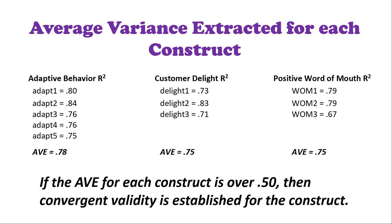The CFA also gives you a squared multiple correlation, or R-square — how much of the variance you are explaining. The average variance extracted is basically where you take the squared multiple correlation for each indicator within a construct and average them. For adaptive behavior with five indicators, the squared multiple correlations were 0.80, 0.84, 0.76, 0.75, and averaging those gives an AVE of 0.78. Fornell and Larker note that if your AVE is over 0.50, you've established convergent validity.